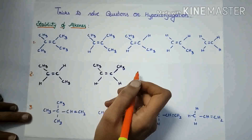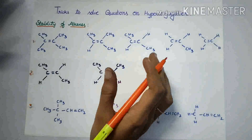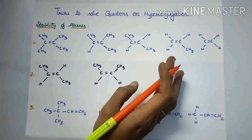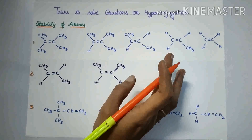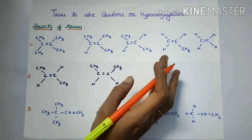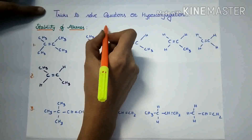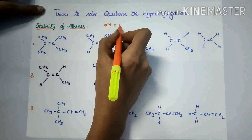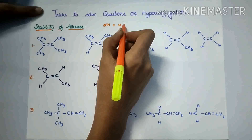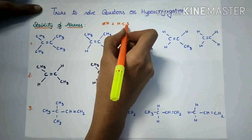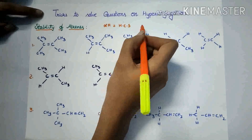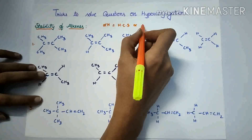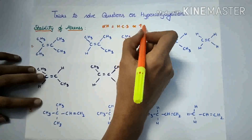Hi everyone, today I am giving some tricks to solve questions on hyperconjugation. Before going to solve these questions, we have to remember that the number of alpha hydrogens is equal to the number of hyperconjugative structures. If more the number of hyperconjugative structures, the stability of that compound will be more.